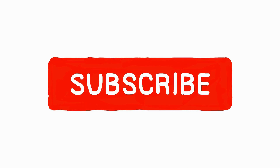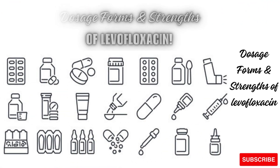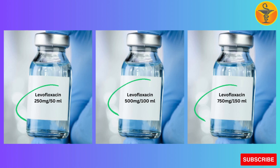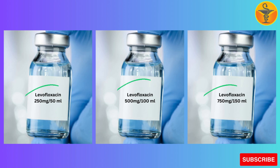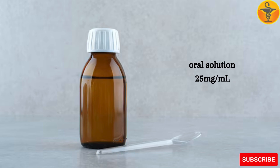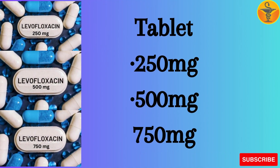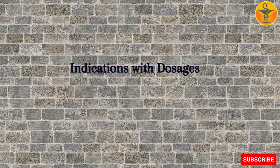Dosage Forms and Strengths of Levofloxacin. Premix ready-to-use injection: 250 mg/50 ml, 500 mg/100 ml, 750 mg/150 ml. Oral solution: 25 mg per ml. Tablets: 250 mg, 500 mg, 750 mg.